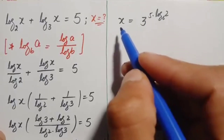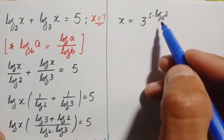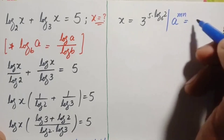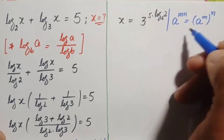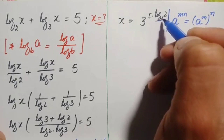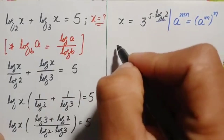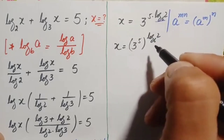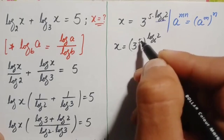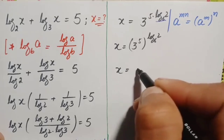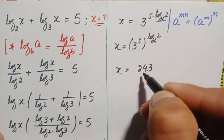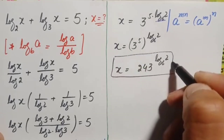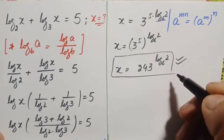Using the exponential identity a raised to power (m times n) equals (a raised to power m) raised to power n, we pull out the power log base 6 of 2 from 3 raised to power 5. Since 3 raised to power 5 equals 243, this becomes x equals 243 raised to the power of log base 6 of 2. This is our answer using the first approach.